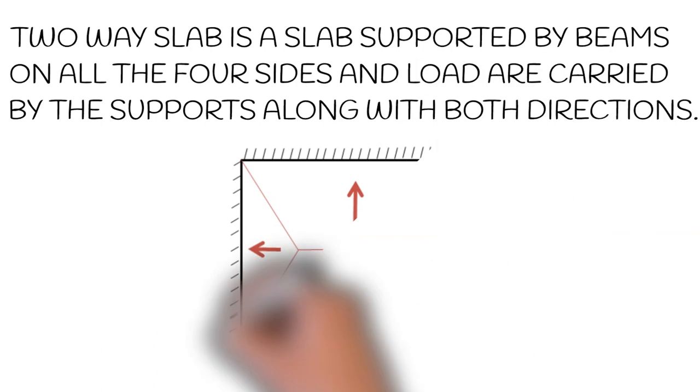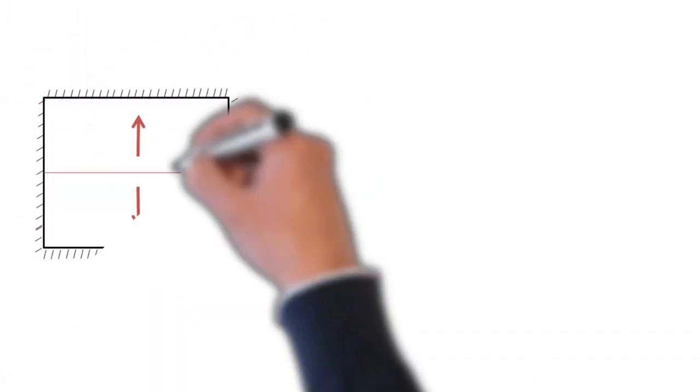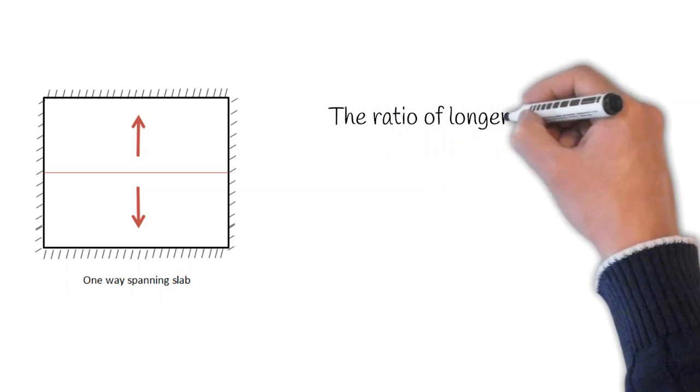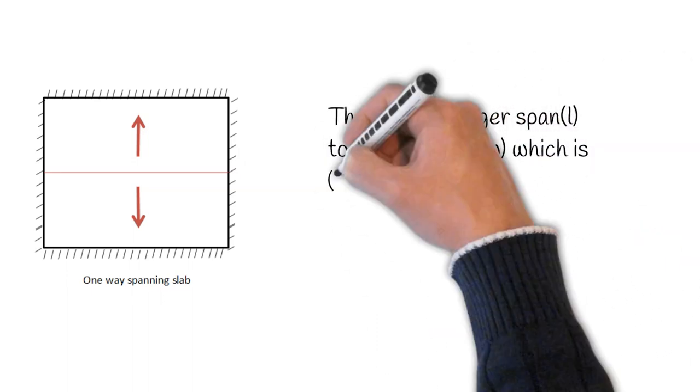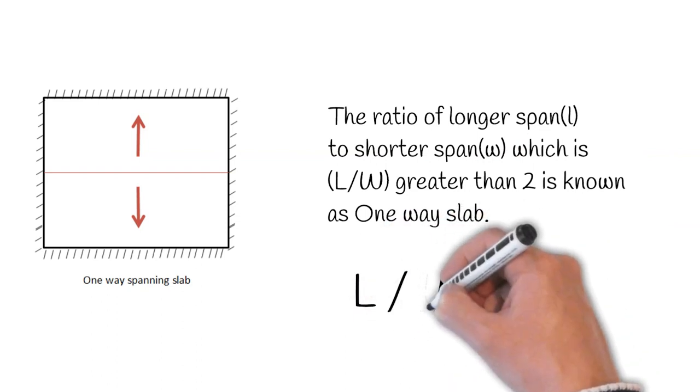In one-way slab, the ratio of longer span L to shorter span W is equal to or greater than two. It is considered as one-way slab because this slab will bend in one direction, that is in the direction along its shorter span.